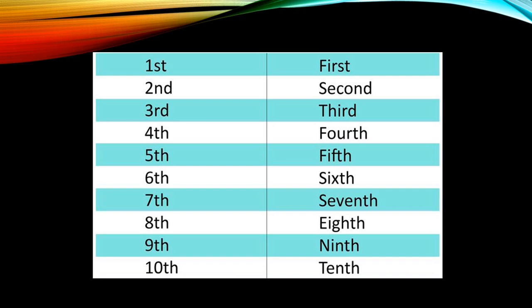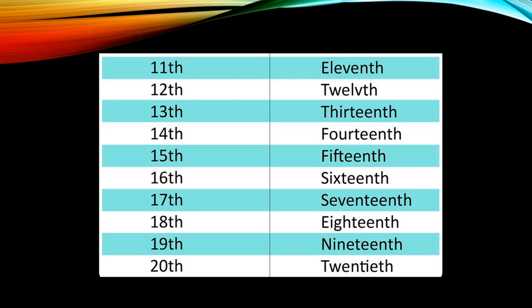Here are other examples of ordinal numbers with their corresponding words. When these ordinal numbers are written out, you can see them on the right side of the table: first, second, fourth, fifth, sixth, seventh, eighth, ninth, and tenth. The ordinal numbers can be spelled out. We also have 11th, 12th, 13th, 14th, 15th, 16th, 17th, 18th, 19th, and 20th.